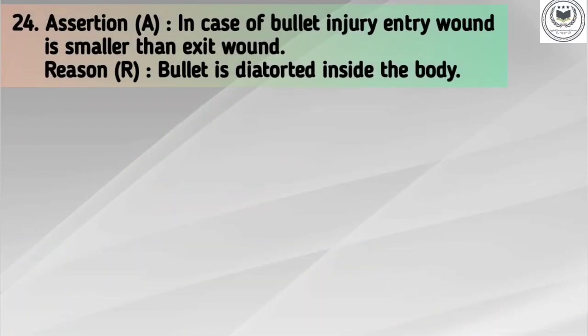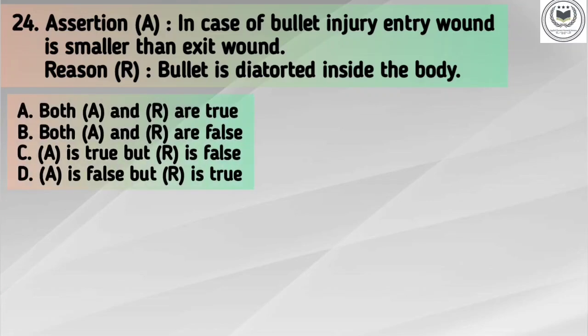Question number 24. Assertion A: In case of bullet injury, entry wound is smaller than exit wound. Reason R: Bullet is distorted into the body. Options: A. Both A and R are true. B. Both A and R are false. C. A is true but R is false. D. A is false but R is true. Answer is option A: Both A and R are true.